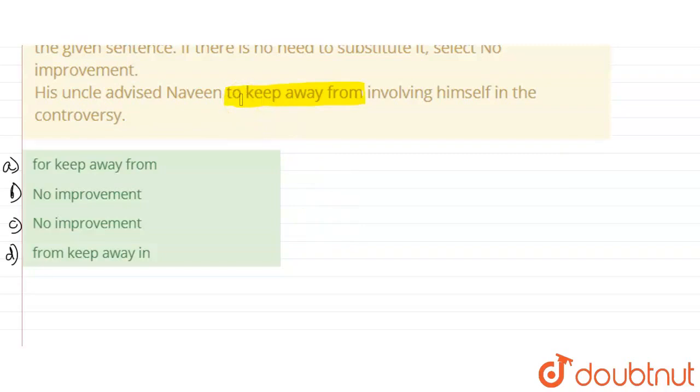To keep away from has joined the two sentences - one where the uncle advises and the other where he should stay away from things involved in the controversy. Keep away from is completely correct. There is no improvement needed. The answer is no improvement. So options B and C are both the same, so we will take B.